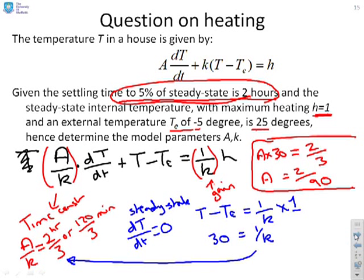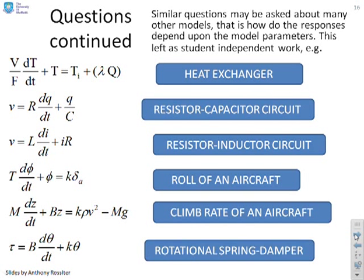Similar questions could be posed on all sorts of other first-order models. The most important thing is that you can use observations to work out key things: if you can get the time constant, it tells you about some parameters; if you can get the gain, it tells you about others. In conclusion, this tutorial covered the relationship between model parameters and corresponding responses for first-order systems.